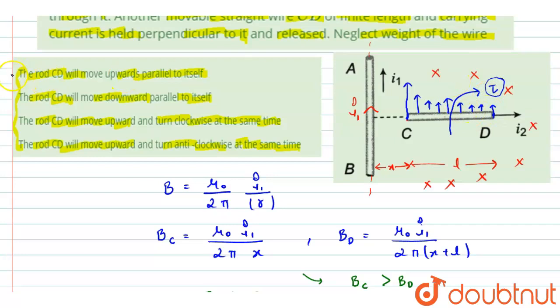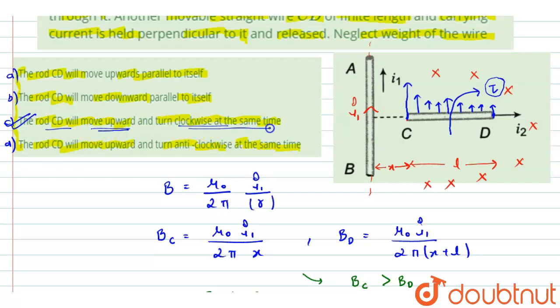From the given options A, B, C, and D, option C is the correct answer: the rod CD will move upward and turn clockwise at the same time. Thank you.